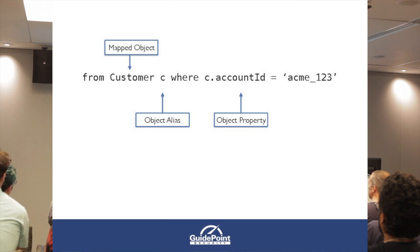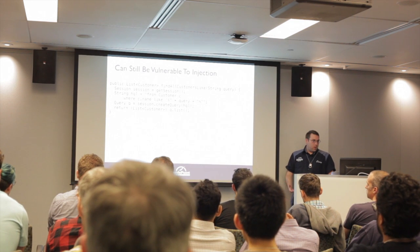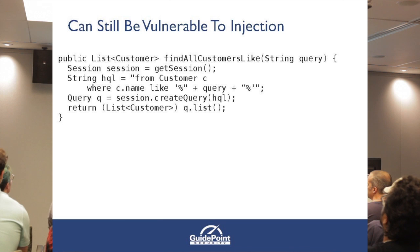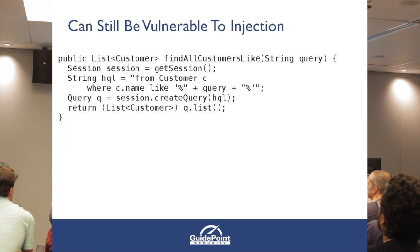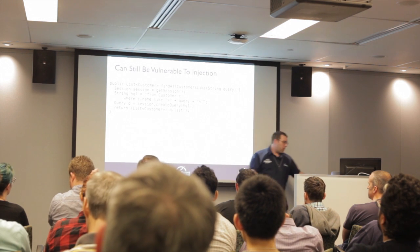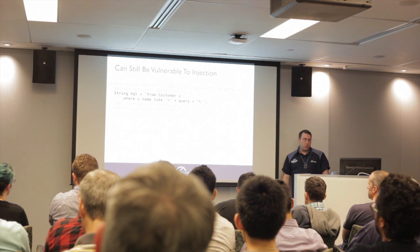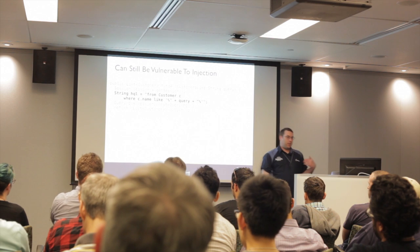Here are the mapped object properties like accountID. We can also alias columns — that's essentially a very simple HQL query. But we can still be vulnerable to injection. Just like in regular JDBC code or SQL injection, if you're forming a query via string concatenation, the same thing happens here — the developer has built an HQL query with a user-controllable value concatenated in, and that's where the injection would happen. It gets passed right to the query call, off to the database.